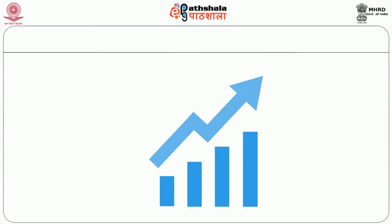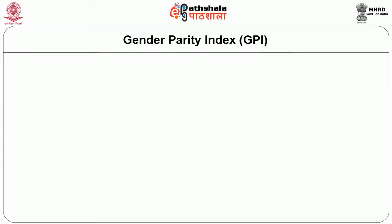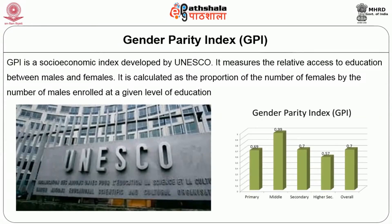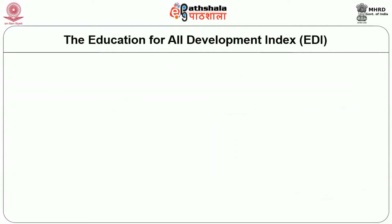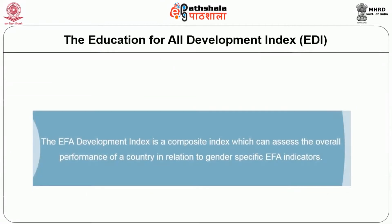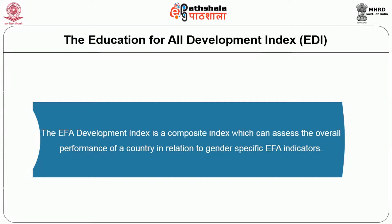Let us examine some composite indicators. The Gender Parity Index, or GPI, is a socio-economic index developed by UNESCO. It measures the relative access to education between males and females, calculated as the proportion of females by the number of males enrolled at a given level of education. Next, the Education for All Development Index, EDI, can assess the overall performance of a country in relation to gender-specific EFA indicators.